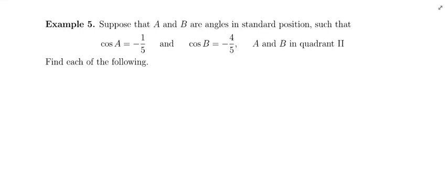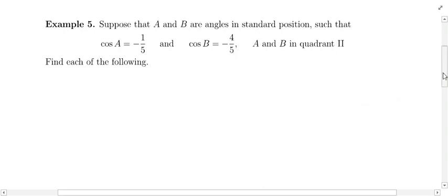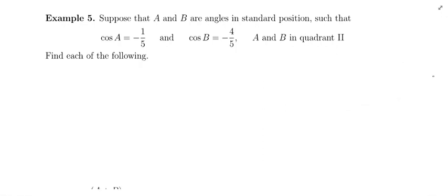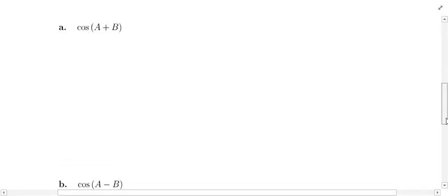Example 5. Suppose that A and B are angles in standard position such that the cosine of A equals negative one fifth, the cosine of B equals negative four fifths, and A and B are both in quadrant 2. We're going to use this information to find each of the following. We need to find in part A the cosine of A plus B.